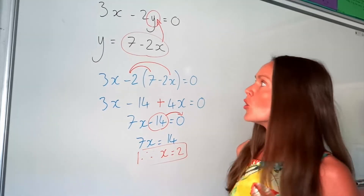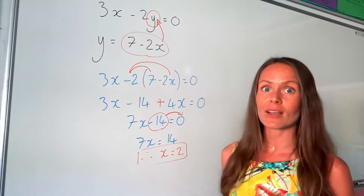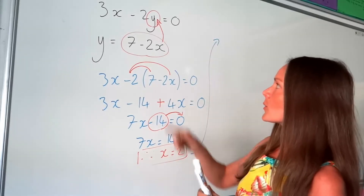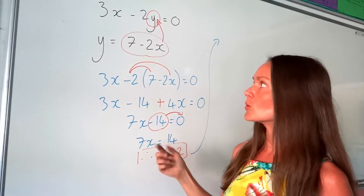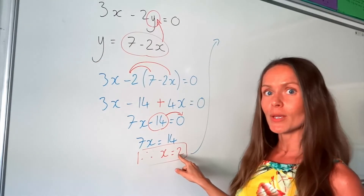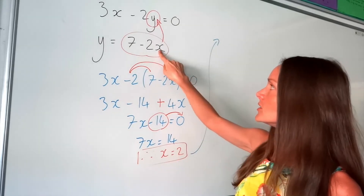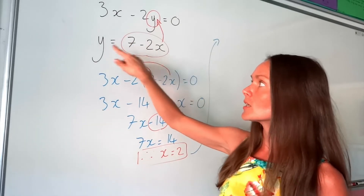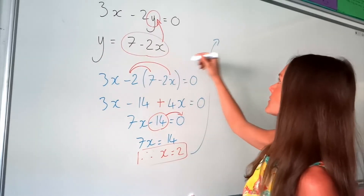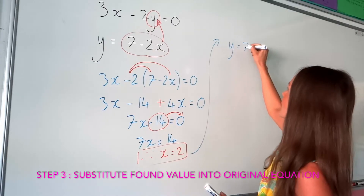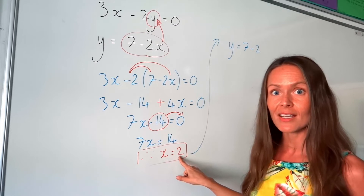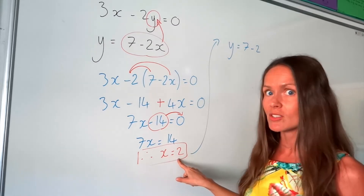So we found the value of x. All that we need to do now is work out the value of y. Going back to that equation from earlier, this one is organised to say y equals. So if we just plug that value of x, which is 2, into here, we can calculate this and it will give us the value of y. So I'm going to write this equation out again, except when I get to the letter x, I'm going to write the number 2 instead, because x is 2 — we just worked it out.